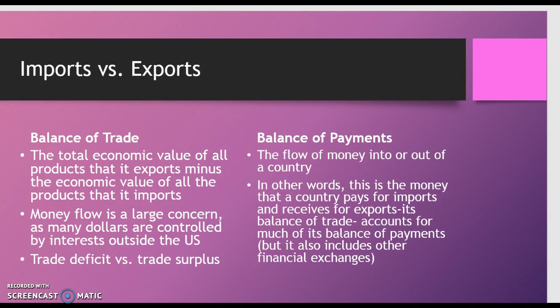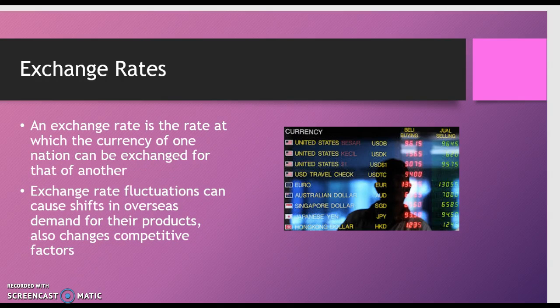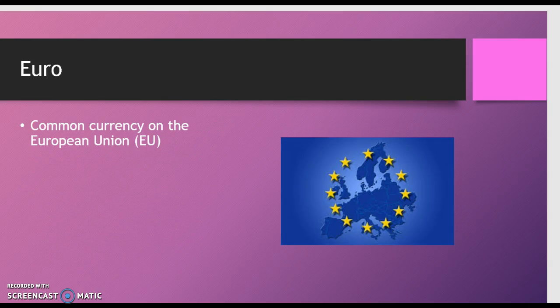An exchange rate is the rate at which the currency of one nation can be exchanged for that of another. Exchange rate fluctuations can cause shifts in overseas demand for products and can change competitive factors. If the dollar is strong in relation to the pound, the prices of all US-made products will rise in England and the price of all English-made products will fall in the United States. The English would buy fewer US products and Americans would be prompted to spend more on English-made products, likely resulting in a US trade deficit with England. It is important to note that the euro is the common currency for the European Union.